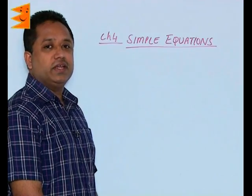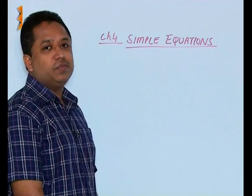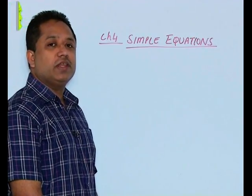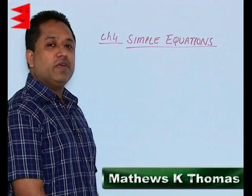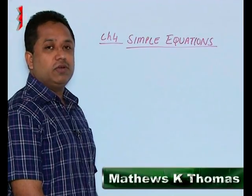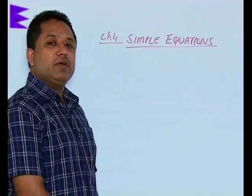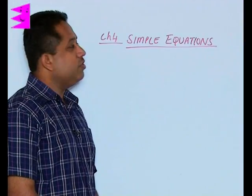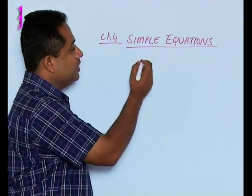We saw the first method to solve a simple equation - the trial and error method where we substitute different values of x until LHS equals RHS, but that can become very cumbersome. Now we're going to do the second method of solution: taking like terms together.